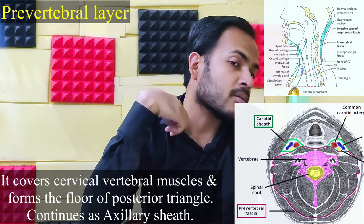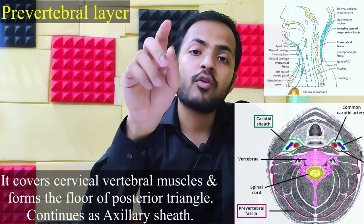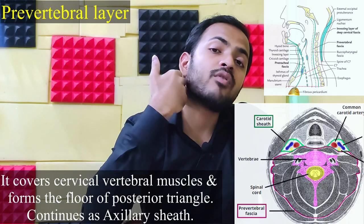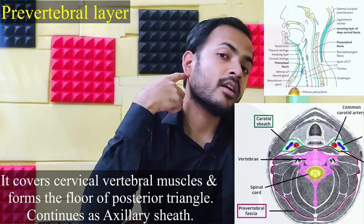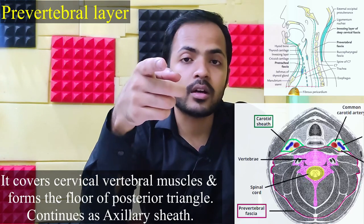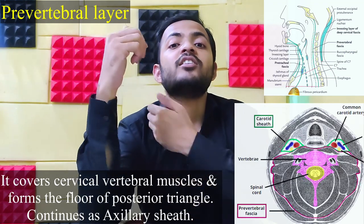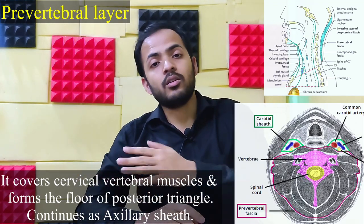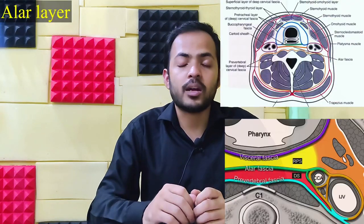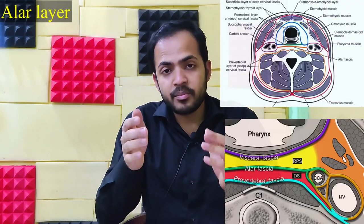The pre-vertebral layer or pre-vertebral fascia encloses the prevertebral muscles — the muscles present in the cervical vertebra. It forms the floor of the posterior triangle and continues as the axillary sheath.